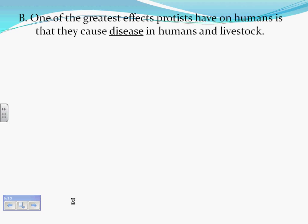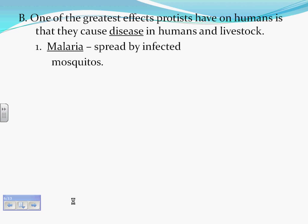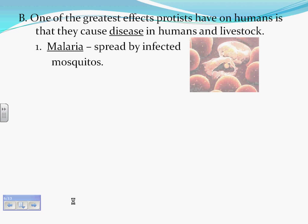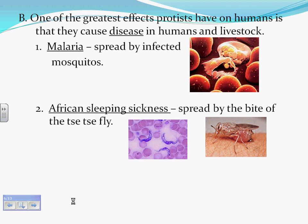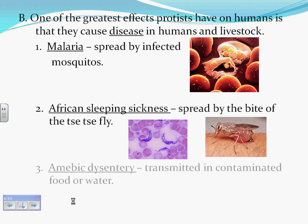One of the greatest effects protists have on humans is that they cause disease in humans and livestock. Malaria is spread by infected mosquitoes. African sleeping sickness is spread by the bite of the tsetse fly. Amoebic dysentery is transmitted through contaminated food or water.